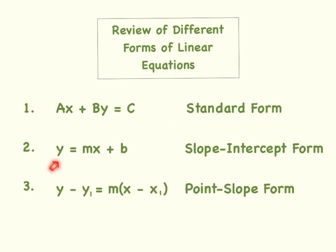The second form is y equals mx plus b, and this is referred to as the slope intercept form. y equals mx plus b is probably what you're most familiar with. It is the form that we want our equation in so that we can graph a line.